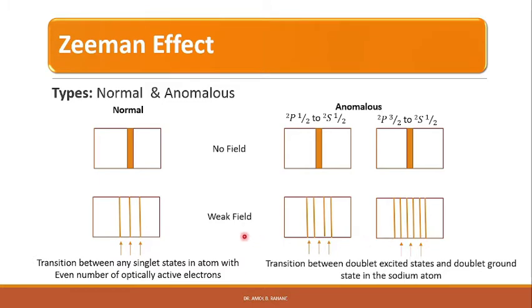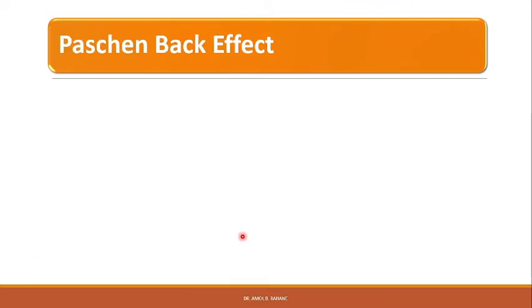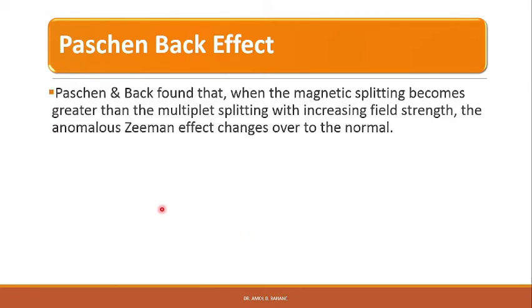The Zeeman effect occurs in the presence of a weak magnetic field. Paschen and Back found that when the magnetic splitting becomes greater than the multiplet splitting with increasing field strength, the anomalous Zeeman effect changes over to the normal Zeeman effect.